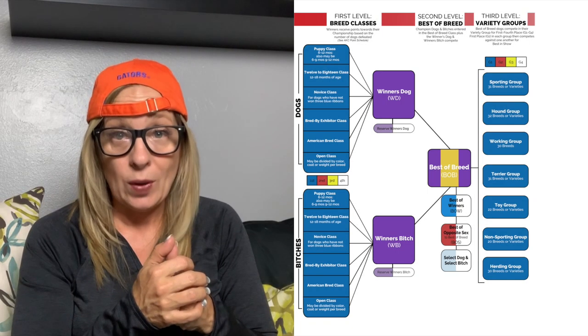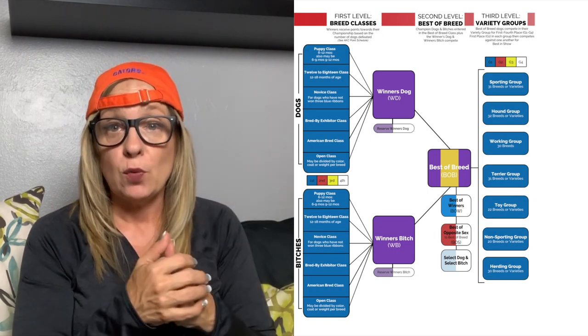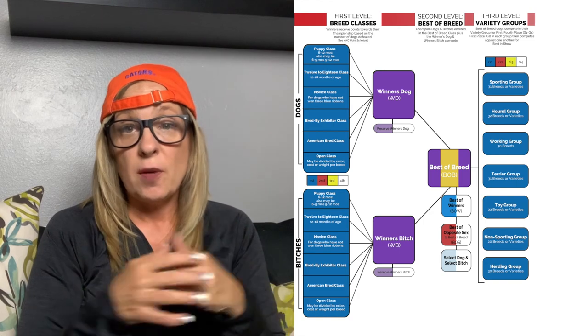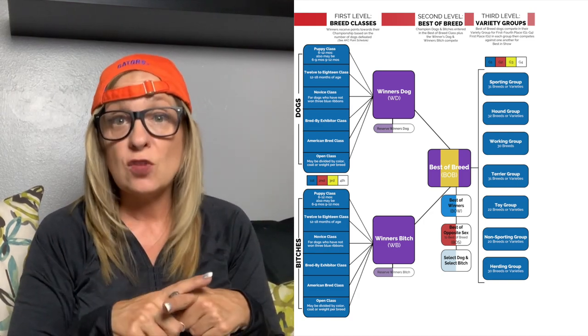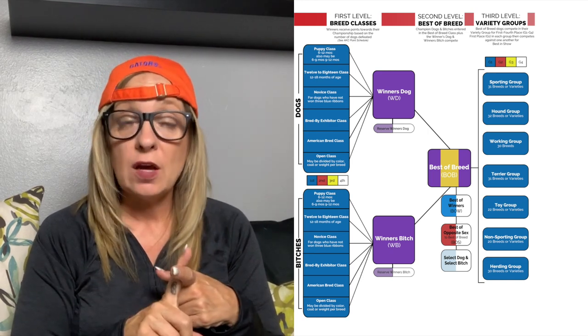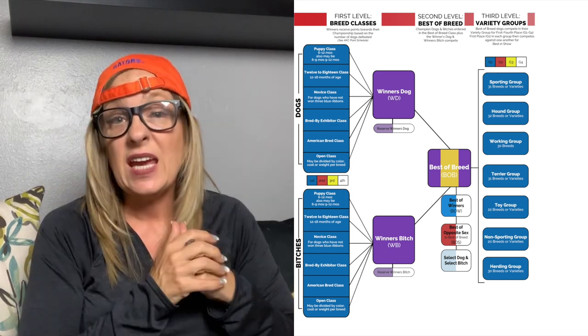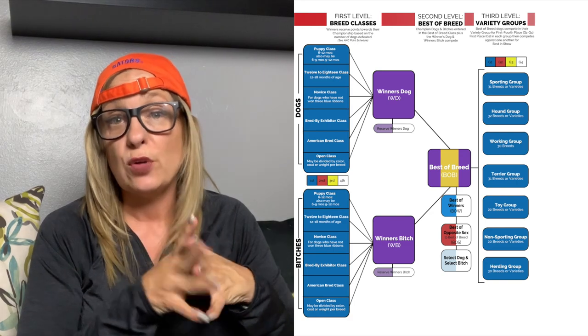We're on to level three, which is the variety groups. All of the dogs from the 193 different breeds that win best of breed at that show go on to compete within their group. The AKC has seven different all-breed groups.